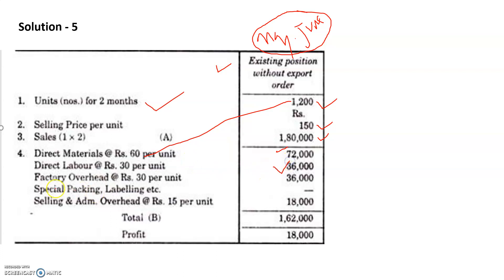Direct material: 1200 into 60 = Rs. 72,000. Direct labor: 1200 into 30 = Rs. 36,000. Factory overhead: Rs. 30 per unit, so 1200 into 30 = Rs. 36,000. Special packing: since there is no export order, it is nil. Selling and administration overhead: Rs. 15 per unit, so 1200 into 15 = Rs. 18,000. Total cost is Rs. 1,62,000 and the profit would be Rs. 18,000.